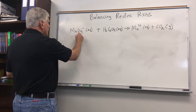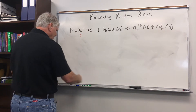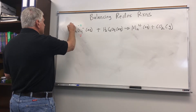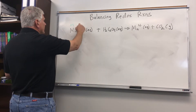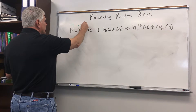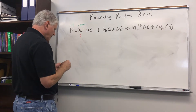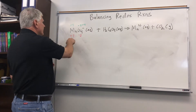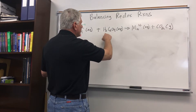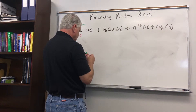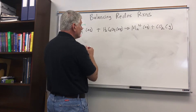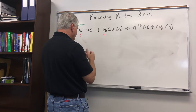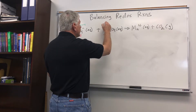Oxygen is minus 2, giving a total of minus 8 for oxygen, so manganese has to be plus 7 to give a total charge of negative 1, which is the charge on the molecule. So manganese is plus 7. Now in this next molecule, we assign hydrogens first: hydrogen is plus 1, giving a total of plus 2 since we have two hydrogens.